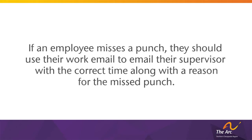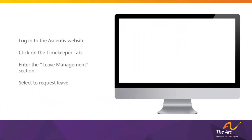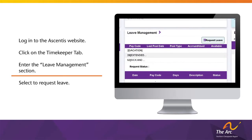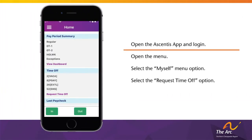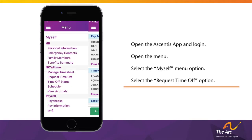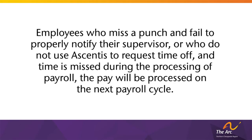The Ascentus timekeeping program must also be used by employees to schedule time off. On desktop computers, log in to the Ascentus website, click on the Timekeeper tab, scroll down to the Leave Management section, and select to request leave with proper advanced notice. On the mobile app, log in, click the menu icon in the top left corner, select the Myself menu option, and scroll down to the Request Time Off option. Using Ascentus to schedule time off is required by the agency — employees can communicate with supervisors about time off, but that communication alone does not ensure paid time off.